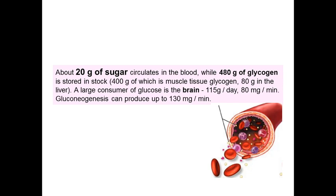About 20 grams of sugar circulates in the blood, while 480 grams of glycogen is stored in stocks and storages. We have two storages of glycogen: first is in muscle tissue, about 400 grams, and in the liver, about 80 grams. The large consumer of glucose is of course the brain - the consumption of the brain is about 15 grams per day, which is about 80 milligrams per minute. We can compensate conditions of decreased glucose level by gluconeogenesis, which can produce up to 130 milligrams per minute and can cover our brain's demand.